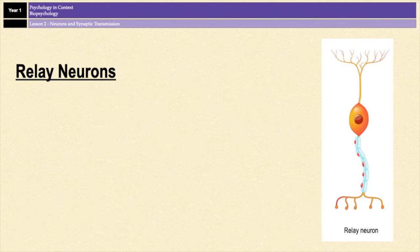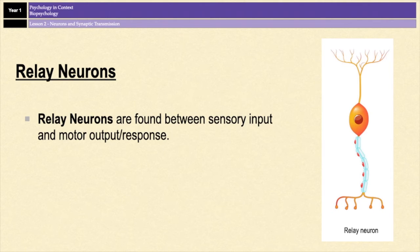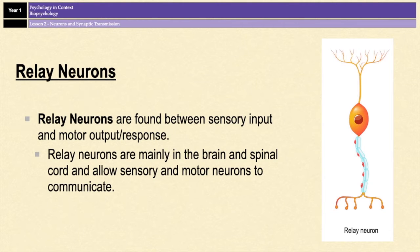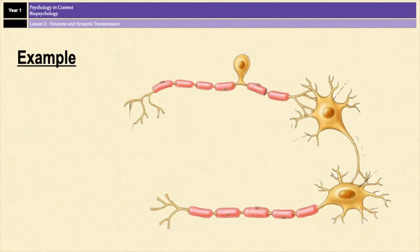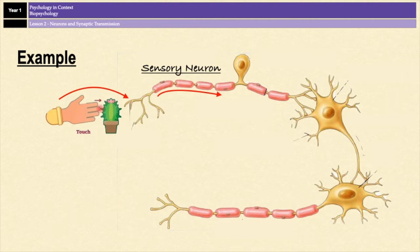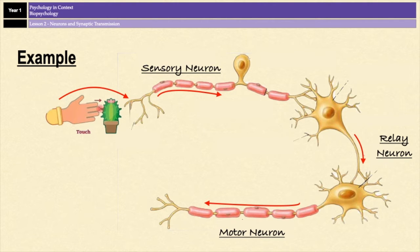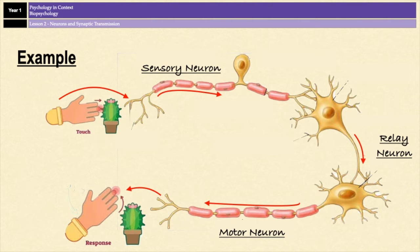Finally, you have relay neurons. Relay neurons are found between sensory input and motor response — effectively in the brain and the spinal cord — and they allow sensory and motor neurons to communicate with each other. For example, if you accidentally spike your hand on a cactus, pain receptors in your hand are stimulated, picked up by a sensory neuron. That information passes through a relay neuron, which passes it on to a motor neuron connected to muscles, resulting in you pulling your hand away.